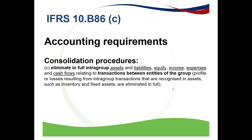The first thing is to understand what the standards require from us, and that will be referred to in IFRS 10B86, specifically section 6. In this standard, the explanation is on the consolidation procedure, which basically says eliminating full intergroup assets and liabilities, equity, income, expenses and cash flows relating to transactions between entities of a group. It also states that profits or losses resulting from intergroup transactions that are recognized in assets such as inventory and fixed assets are eliminated in full.